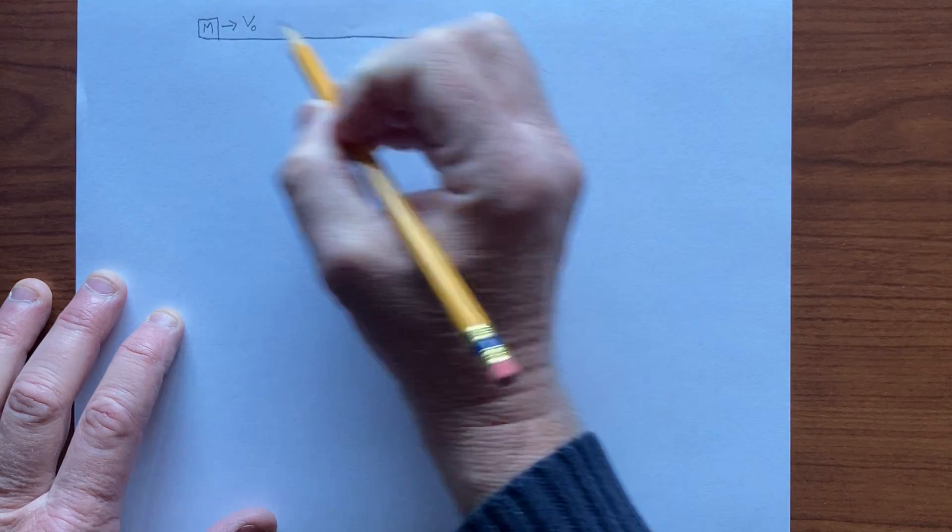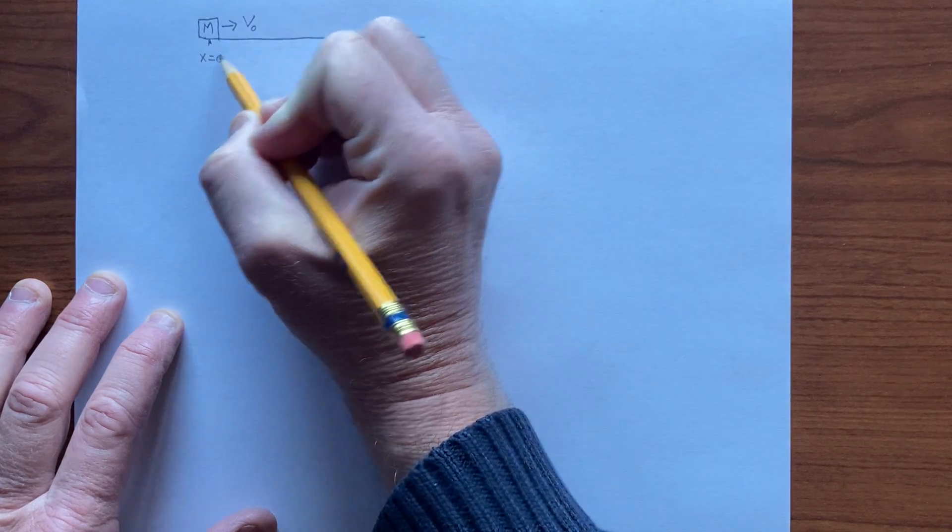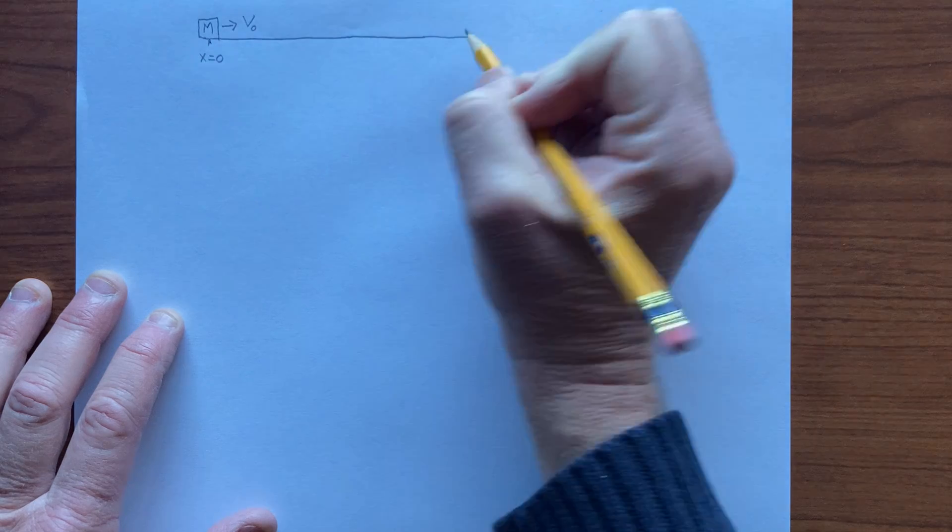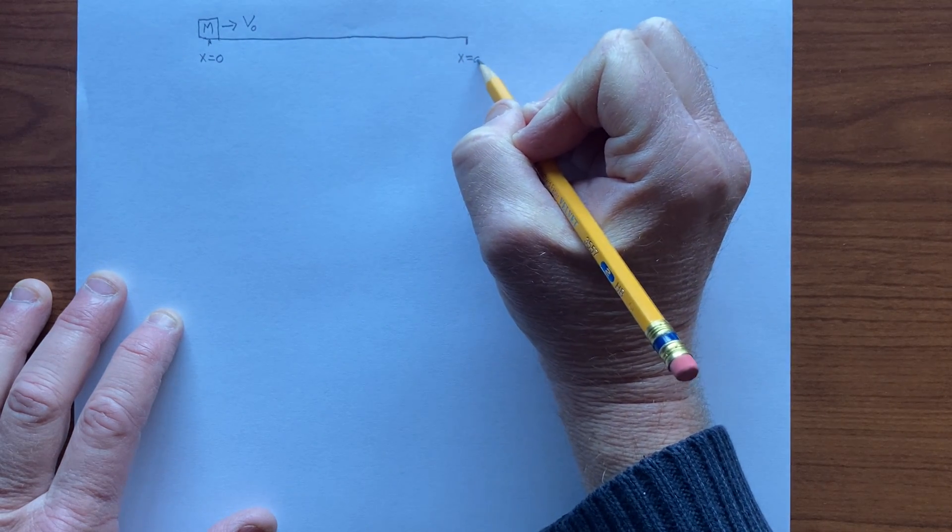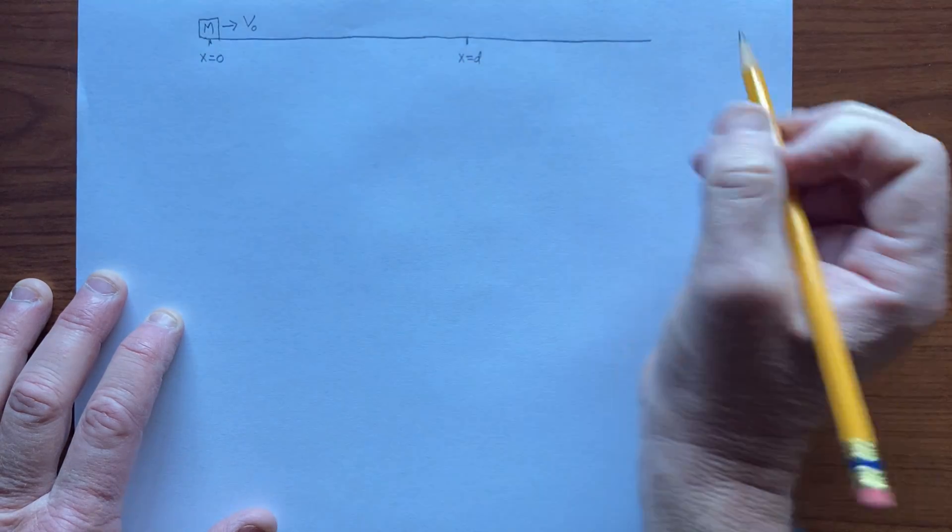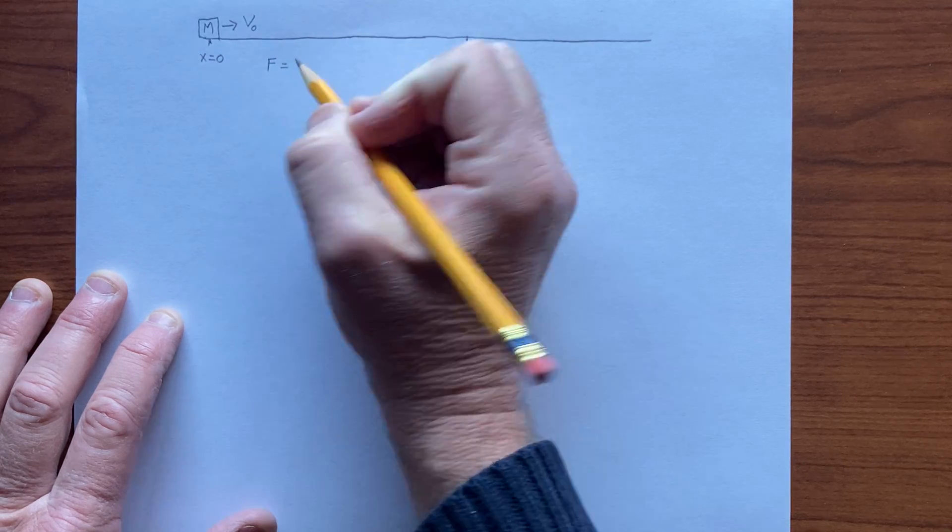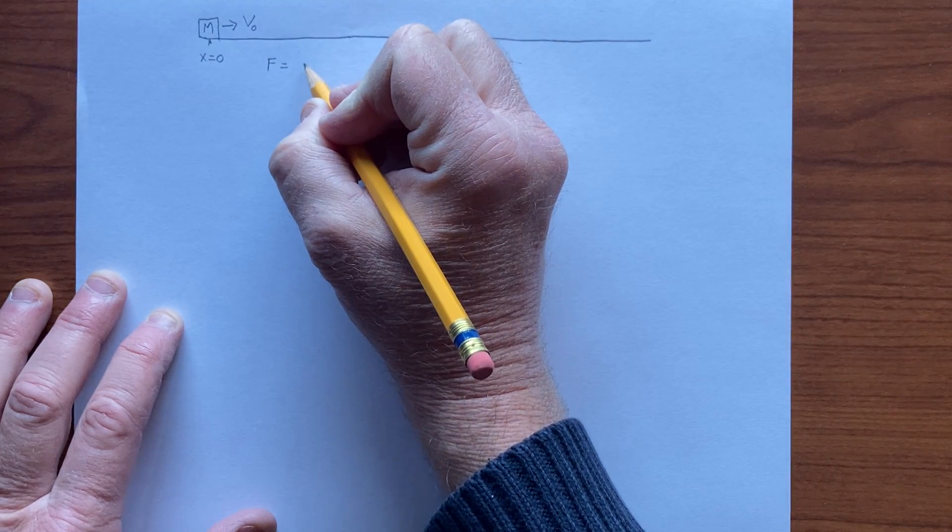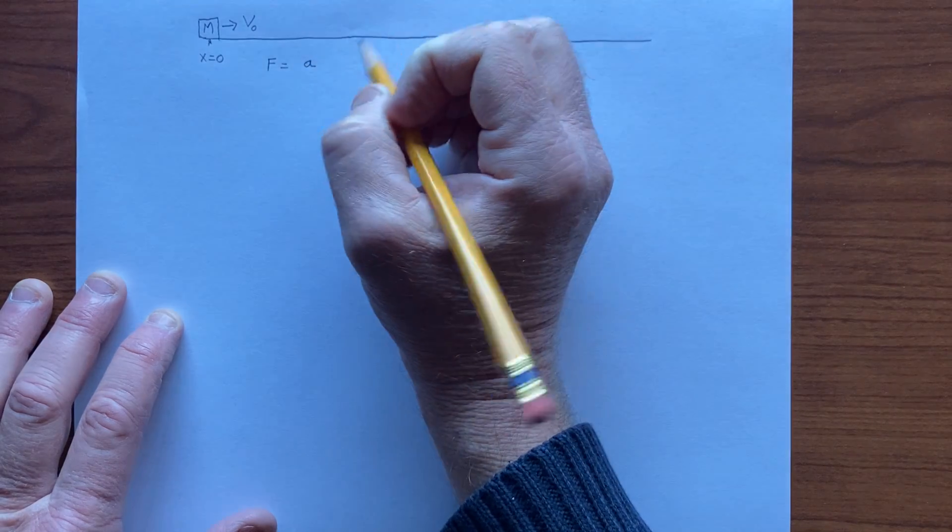So let's say this is x equals 0 and here is x equals d. There's no friction on this surface, but there's a force along here of magnitude a times x squared, where a is some constant coefficient. The force stops acting at x equals d.